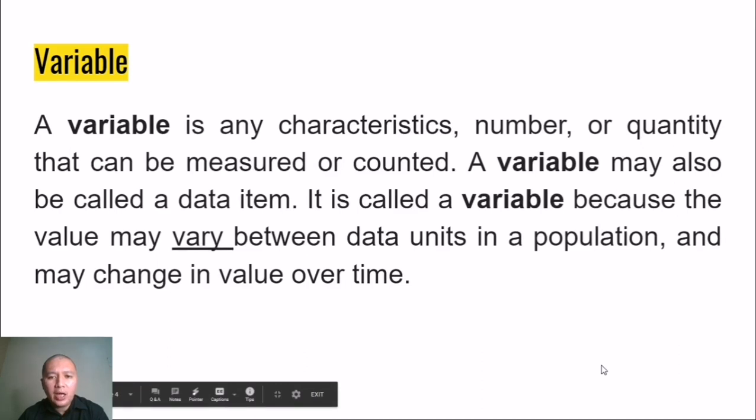A variable is any characteristics, number, or quantity that can be measured or counted. A variable may also be called a data item. It is called a variable because the value may vary. From the root word itself, vary means there could be any changes or difference in the set of variables between the data units in a population and may change in value over time. Please take note that when you are studying statistics, data is the foremost important topic that should be covered.